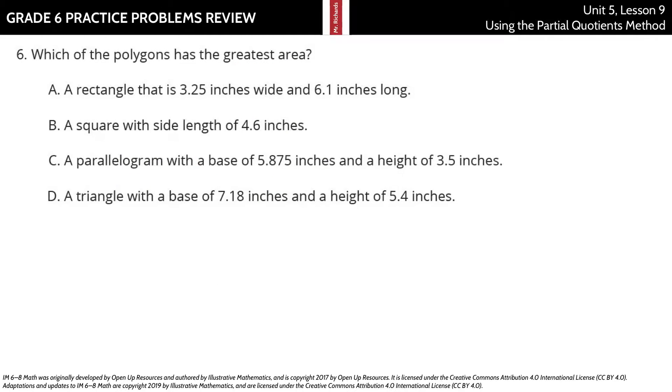Which of the polygons has the greatest area? Let's look at A. Rectangles can be found by taking the length times the width. And so, 3 and 25 hundredths times 6 and a tenth. This is 19 and 825 thousandths square inches.